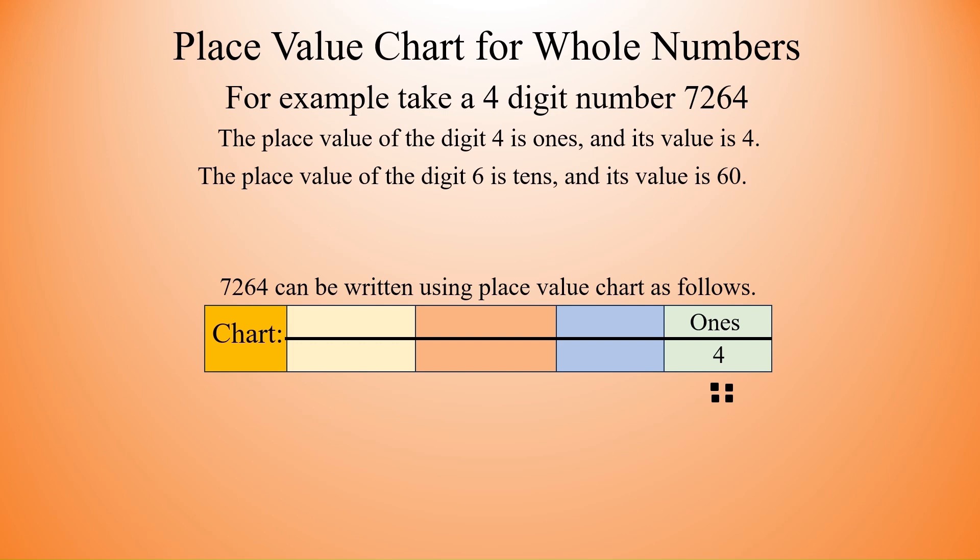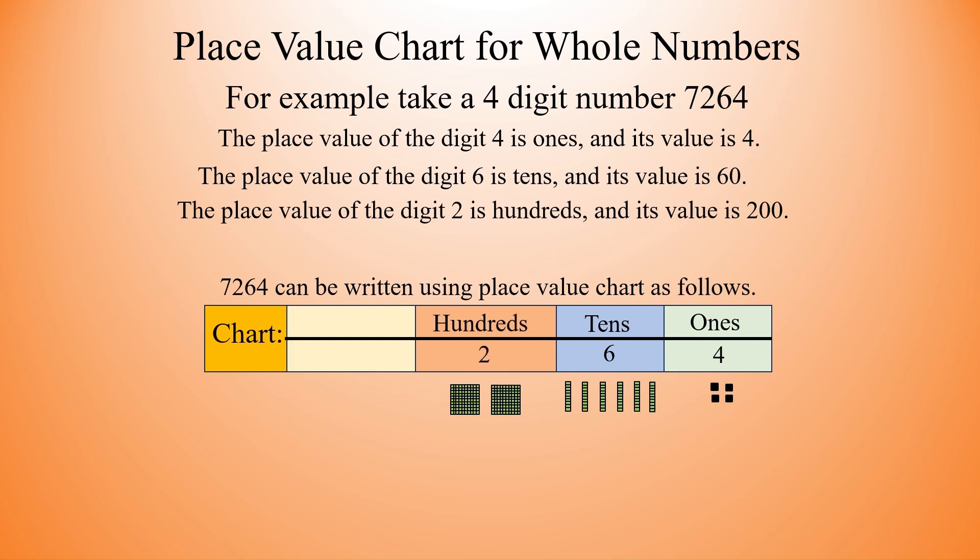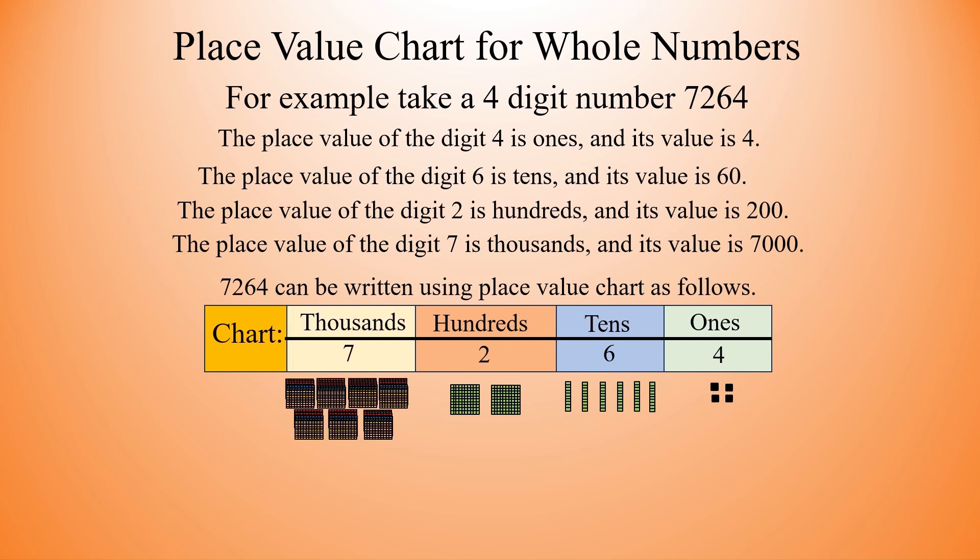Next, the place value of the digit 6 is tens and its value is 60. So after ones you mark tens and below that you write 6. This is how we represent it. The place value of the digit 2 is hundreds and its value is 200. So write hundreds, below that 2. And the last one, the place value of the digit 7 is thousands and its value is 7000. So here thousands, below that 7, and this is how we mark it.